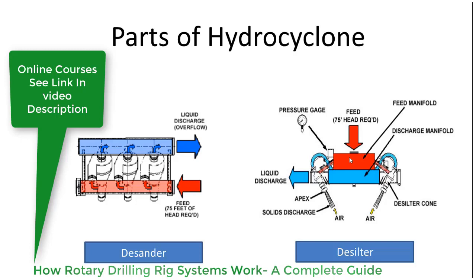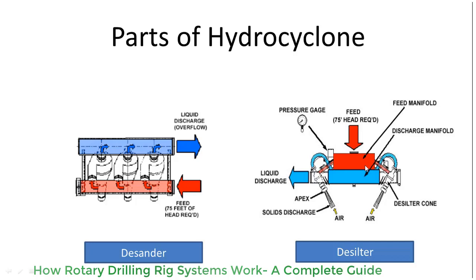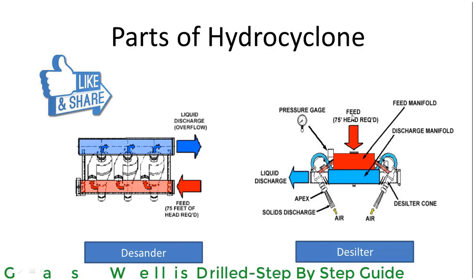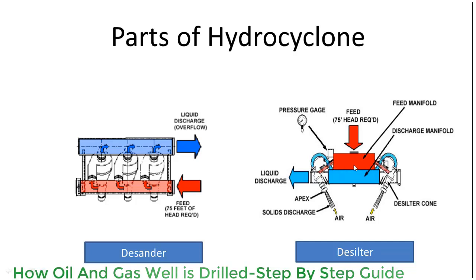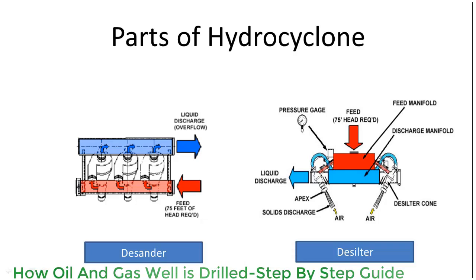These cones are installed on a common manifold that has a common feed manifold and similarly a common discharge manifold. The desilter, as we can see, has a feed manifold and a discharge manifold, as well as the hydrocyclone cone.